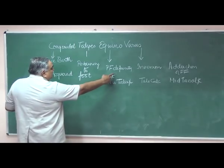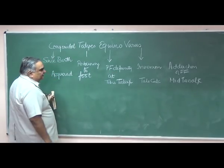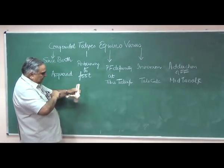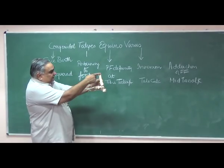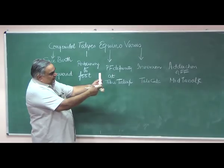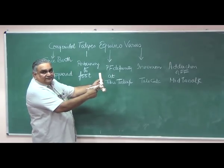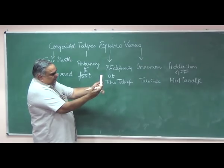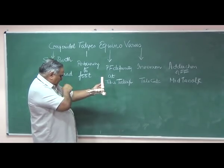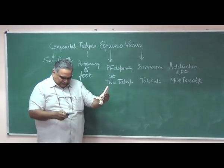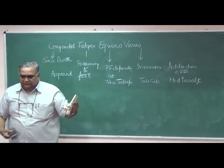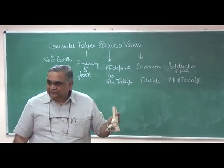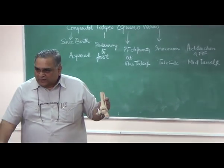First of all, let us draw the diagram of the tibiotalar joint. This is the fibula and this is the talus. Plantar flexion means the foot goes like this, so that the person starts walking on toes like a horse. That is why the word equino.